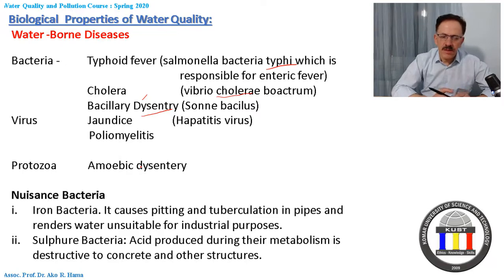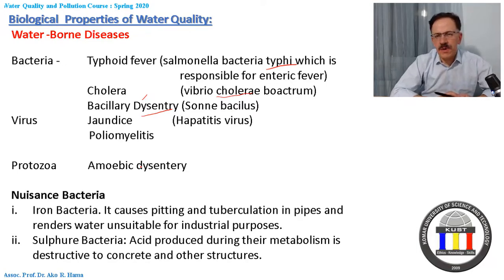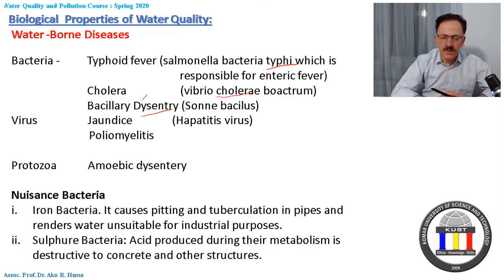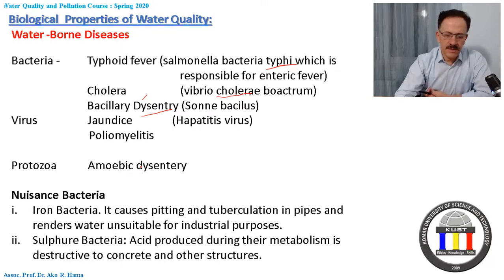In general, we have two types of bacteria: iron bacteria and sulfur bacteria. Iron bacteria cause problems in water networks — specifically tuberculation in pipes — and make water unsuitable for industrial purposes. Sulfur bacteria also produce a kind of metabolism and are destructive when present in concrete and other structural building materials.